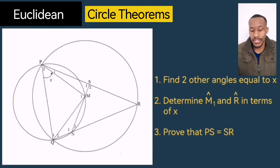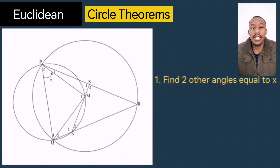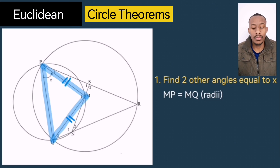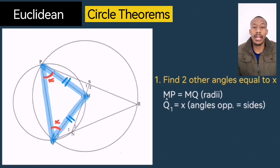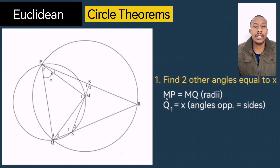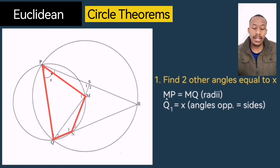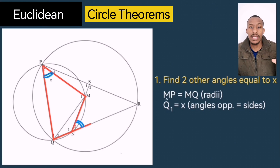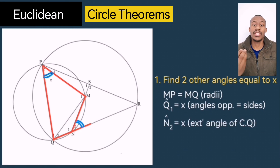For the first question, find two angles equal to X. First, I'll look at the radii — MP and MQ are radii of the circle, so those lines are equal, forming an isosceles triangle. MPQ is an isosceles triangle with angle Q1 equal to angle P2. Therefore angle Q1 is X, and the reason is angles opposite equal sides. The second angle was harder to spot: if you consider PMNQ as a cyclic quad, angle N2 is an exterior angle of that cyclic quad. The theorem states that the exterior angle of a cyclic quad equals the opposite interior angle, so N2 equals P2, meaning N2 is also X.